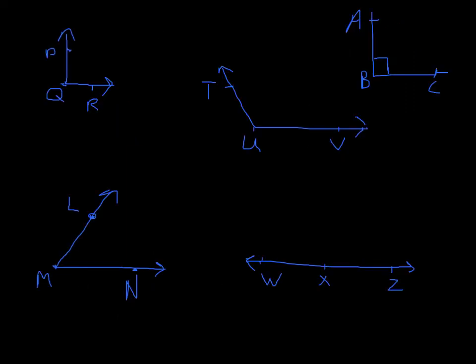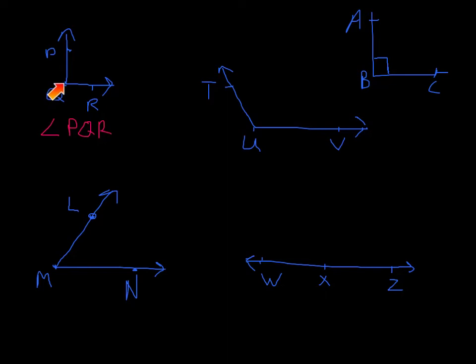On our next slide, we're going to be identifying specific angles. This first angle is a right angle. The way we write a right angle is by using the angle symbol and calling it angle PQR. It's very important that the vertex — the middle point — has its letter in the middle. So we write P, Q, R, with Q as the vertex in the middle.